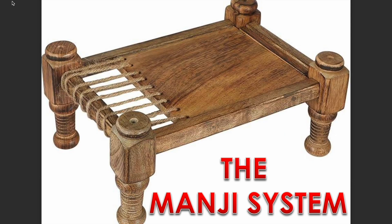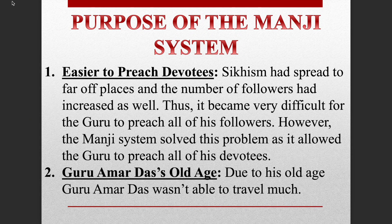Now let's talk about the Manji system. Manji means a wooden cot. You know that until the 16th century, Sikhism had become very popular. Their followers and disciples had increased, and they had reached people at great distances.